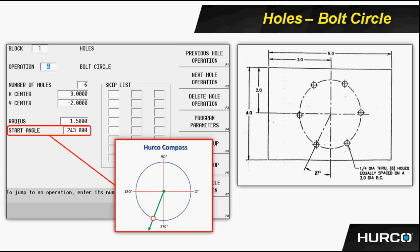It wants to know the radius of the bolt circle, in our case it's an inch and a half, and then it's asking for something called a start angle. Somewhere on the bolt circle, we have to be able to determine where at least one of the holes is.